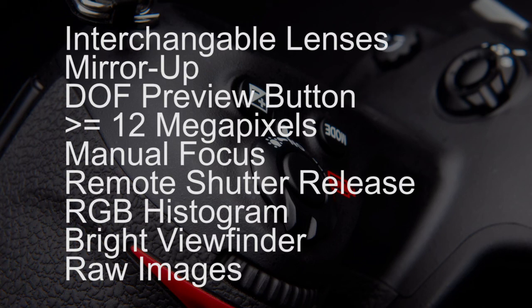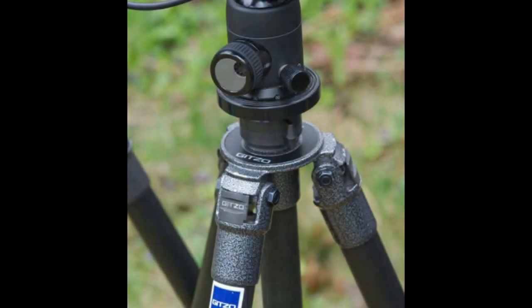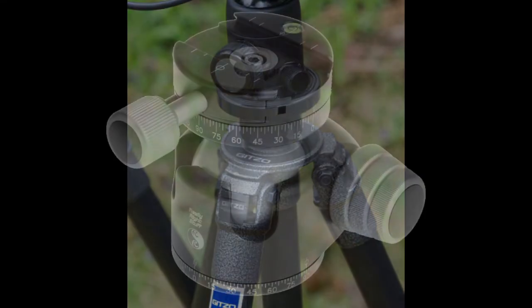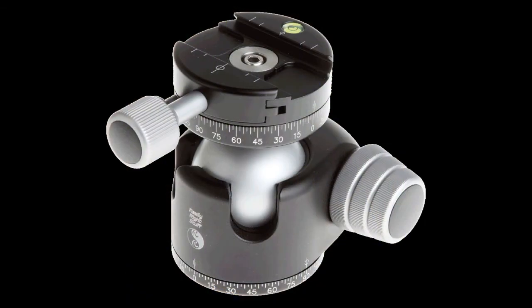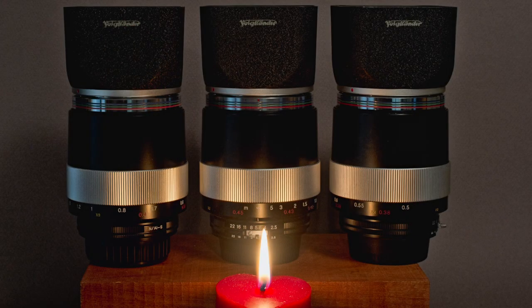Here is the short list of proper equipment. You'll need a DSLR with the following features: interchangeable lenses, a mirror-up option, a depth-of-field preview button, a 12-megapixel or higher sensor, the ability to focus in manual mode, a remote shutter release, a histogram screen, a bright viewfinder, and the capacity to process RAW images. Second, you need a sturdy tripod. Third, you need a good ball head. Fourth, you need what's called an L-bracket. Fifth, you need good lenses.